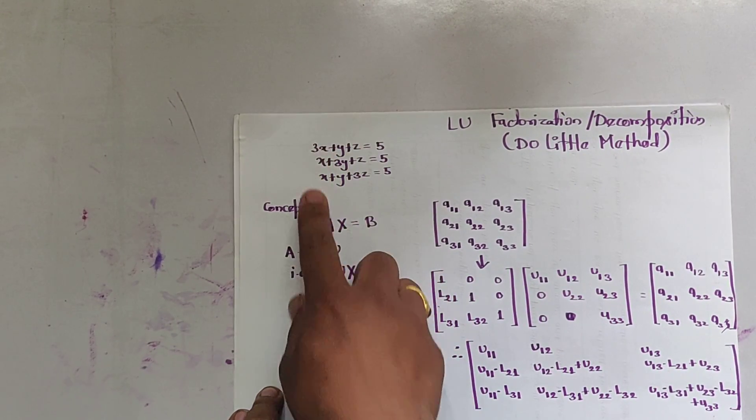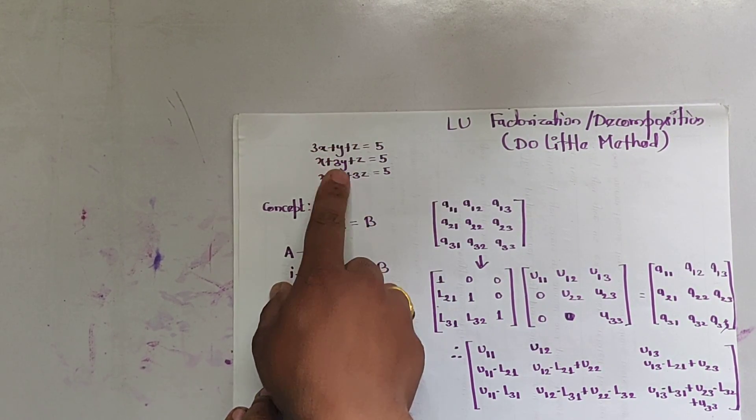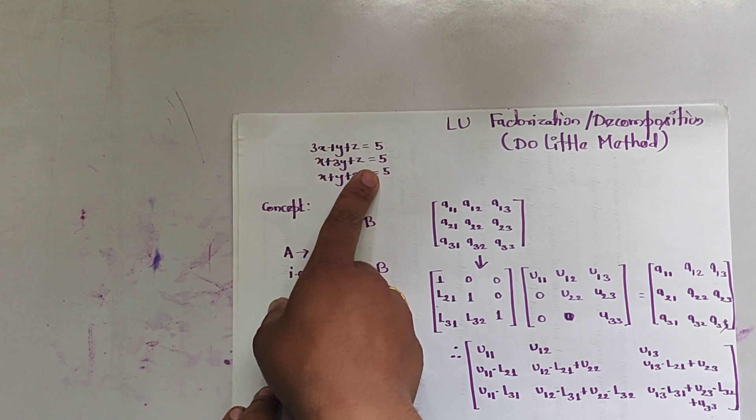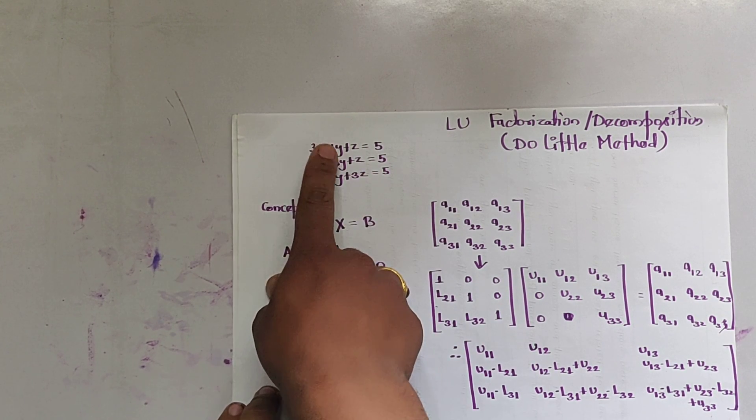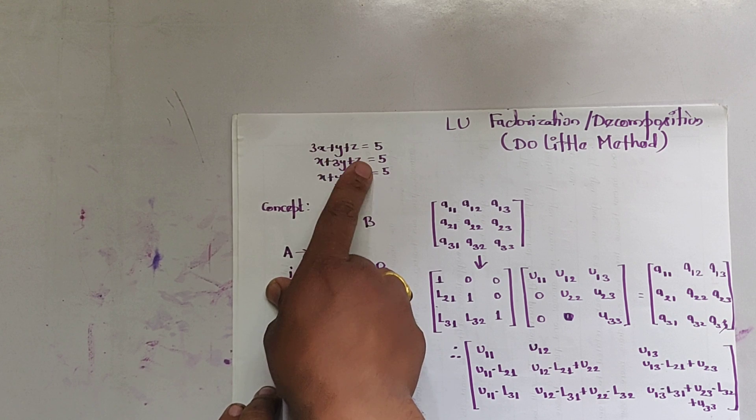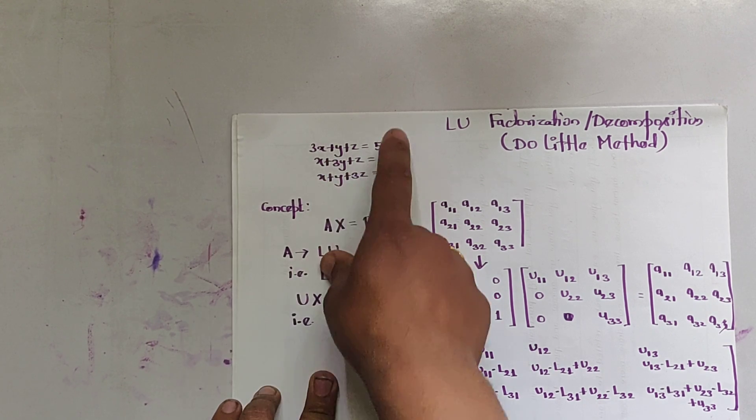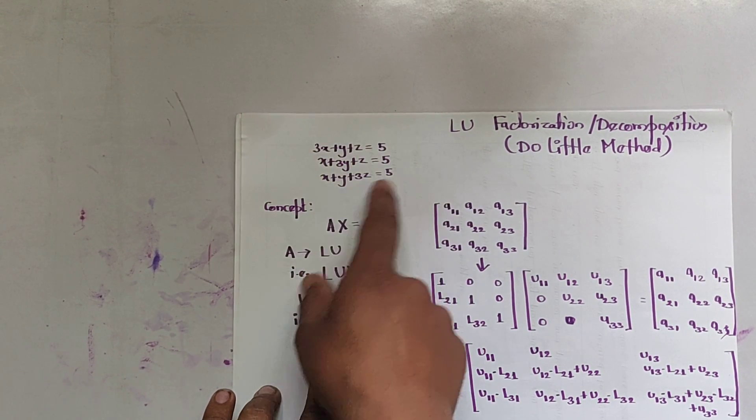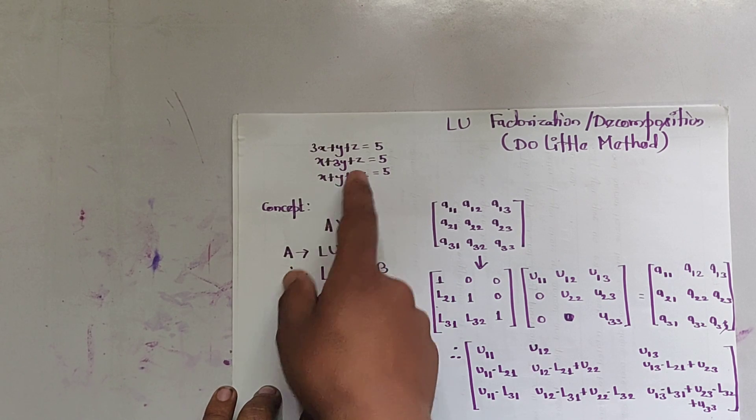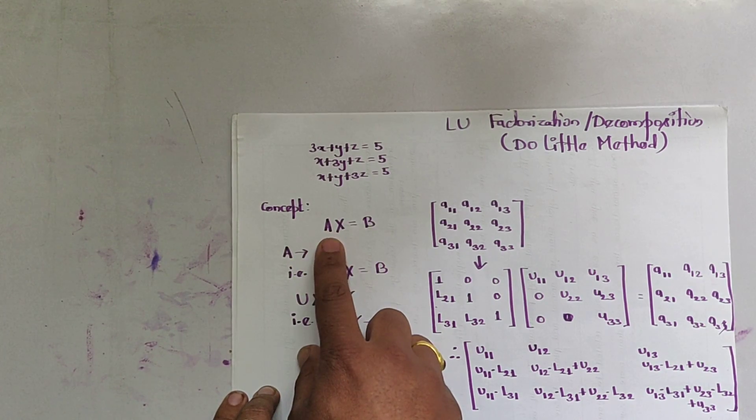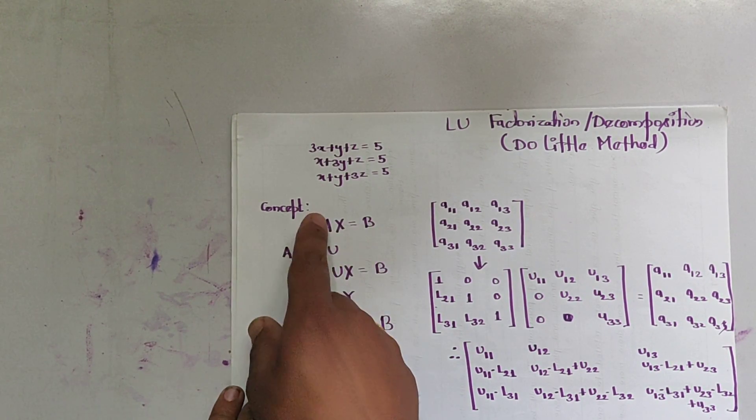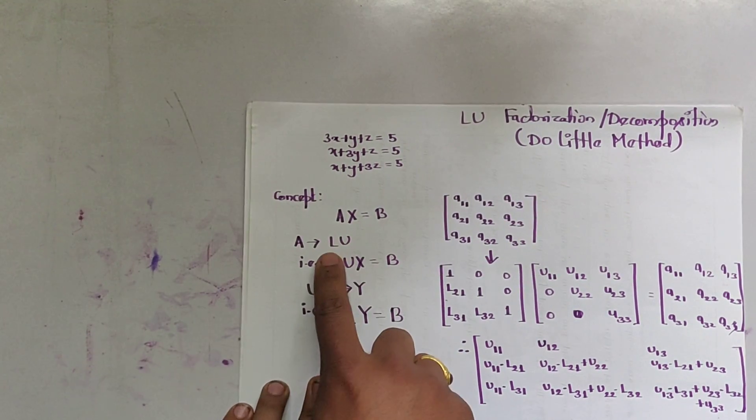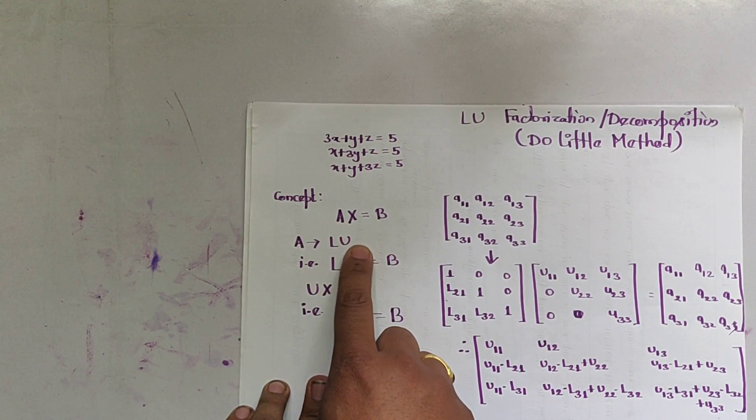This is the given equation and we can convert this equation into matrix: 3, 1, 1; 1, 3, 1; 1, 1, 3 and 5, 5, 5. It can be termed as AX = B and we decompose this A matrix into lower and upper matrix.